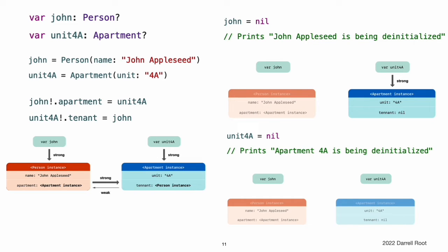Note, in systems that use garbage collection, weak pointers are sometimes used to implement a simple caching mechanism because objects with no strong references are deallocated only when memory pressure triggers garbage collection. However, with ARC, values are deallocated as soon as their last strong reference is removed, making weak references unsuitable for such a purpose.